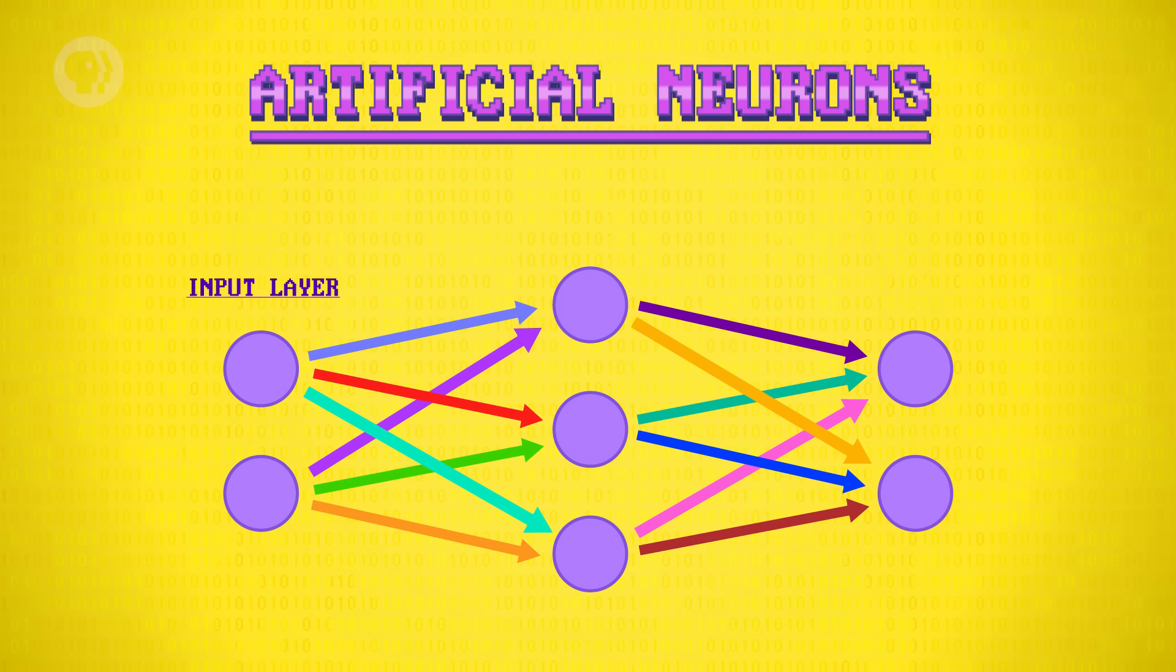Our first layer, the input layer, provides data from a single moth needing classification. Again, we'll use mass and wingspan. At the other end, we have an output layer with two neurons. One for emperor moth, and another for lunar moth. The most excited neuron will be our classification decision. In between, we have a hidden layer that transforms our inputs into outputs, and does the hard work of classification.